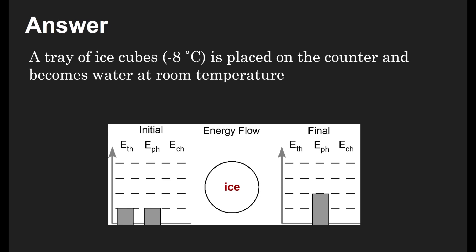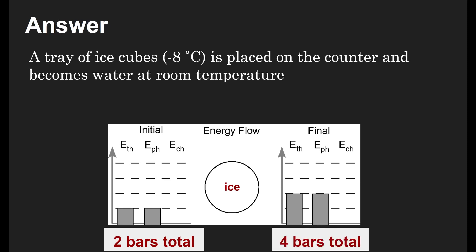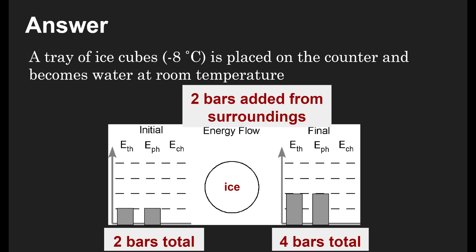Then we started very cold, negative eight Celsius. So I'm going to give that one bar of thermal energy. Remember, thermal energy is your choice. So you might have given it a different amount, but I'm going to do one. And then it ends at room temperature. So I'm going to say that's two bars of thermal energy, which means I've started with two bars of energy and ended with four bars of energy, which means I gained two units of energy. So for my flow of energy, I need to show two units of energy coming in from the surroundings into the ice.